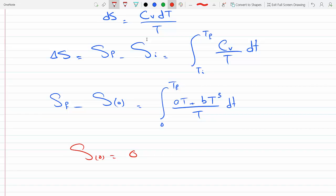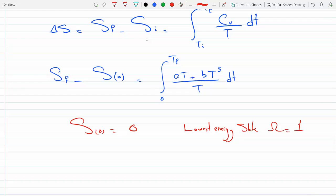The reason I'm using this from 0 is because I know what S of 0 is. S of 0 equals 0. Why is that? Because at 0 temperature the system just achieves its lowest energy state, and that lowest energy state is unique. The multiplicity of the lowest energy state is 1.